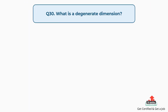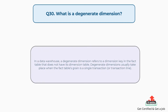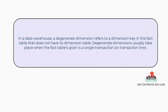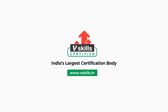Question number thirty: What is a degenerate dimension? In a data warehouse, a degenerate dimension refers to a dimension key in the fact table that does not have its own dimension table. Degenerate dimensions usually take place when the fact table's grain is a single transaction or transaction line. For more such videos, subscribe to our channel.